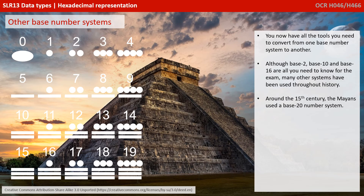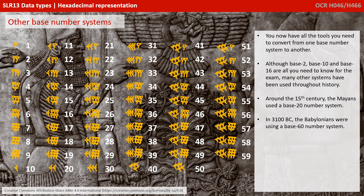You now have all the tools you need to convert from one base number system to another. Although base 2, 10, and 16 are all you need to know for the exam, many other systems have been used throughout history. Around the 15th century, for example, the Mayans used a base 20 number system. And in 3,100 BC, the Babylonians were using a base 60 number system.